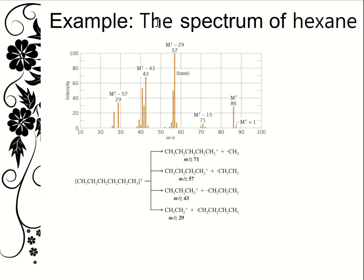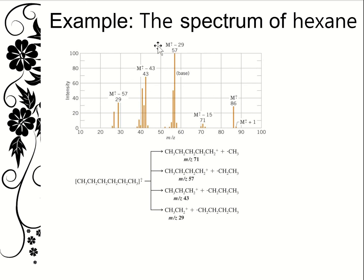Here is an example of the spectrum of hexane. Hexane has six carbons and a number of hydrogens, so we have our M+ peak at 86 — the calculated molar mass of hexane is 86. We also have an M+1 peak here at 87. The base peak, which is the most intense peak with an intensity of 100, is at mass-to-charge ratio 57.